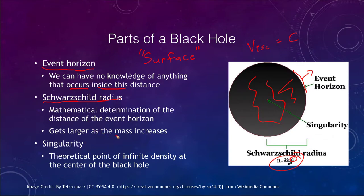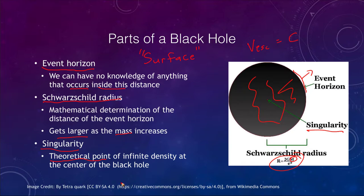As the mass increases, the radius will get larger, and therefore the event horizon gets larger, because the Schwarzschild radius measures the distance from the singularity at the center to the event horizon. The singularity is a theoretical point where everything collapses down — there is nothing that can stop that collapse, and eventually it reaches a pinpoint of infinite density. So it could have been all the material in a star, but it is now collapsed down to just a single point smaller than the tip of a pin.